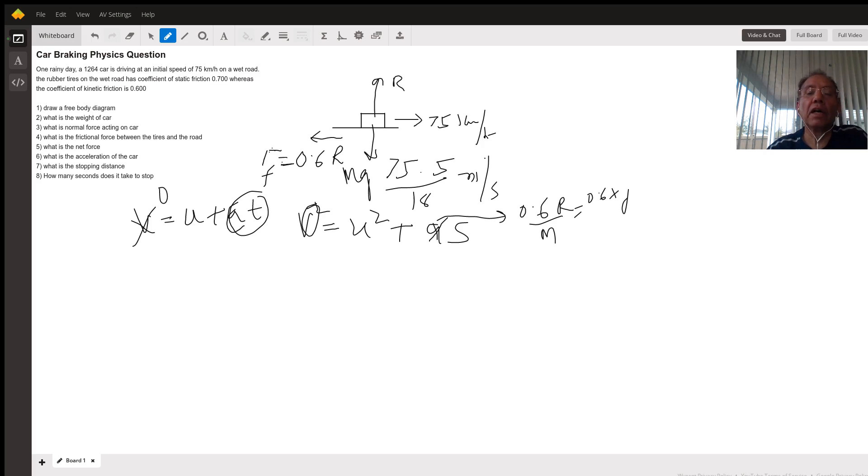The free body diagram is right here. There's a normal reaction R, a weight mg acting downwards, a speed of 75 kilometers per hour on the right, and a force of kinetic friction acting on the left side. The force of kinetic friction is 0.6 times R.